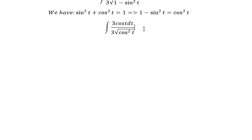And now we have the square root of cosine t squared is about cosine t. And now 3 cosine t divided by 3 cosine t, you only have the integral of dt.